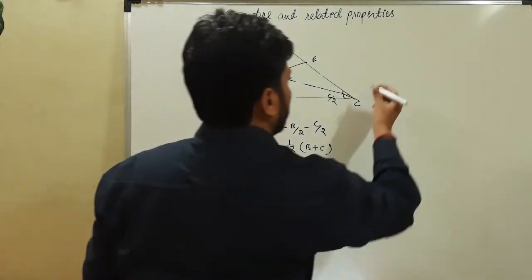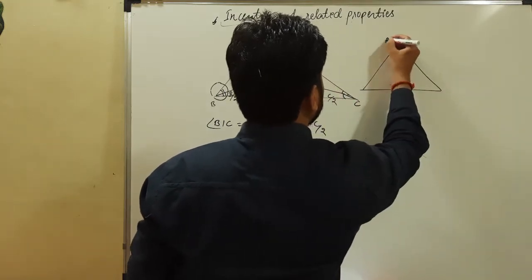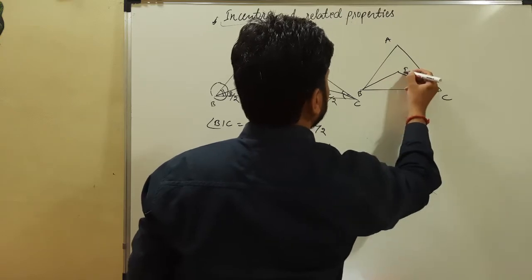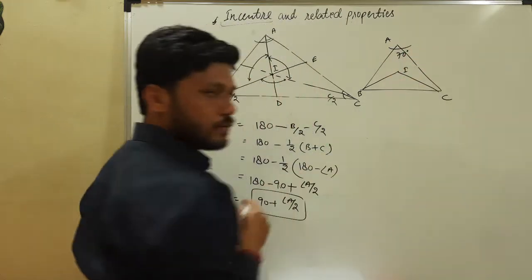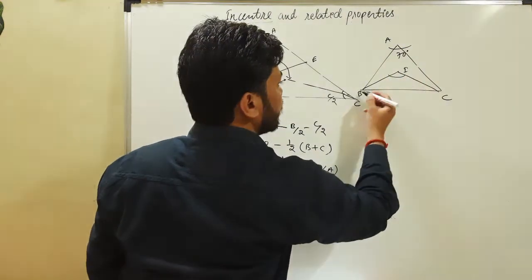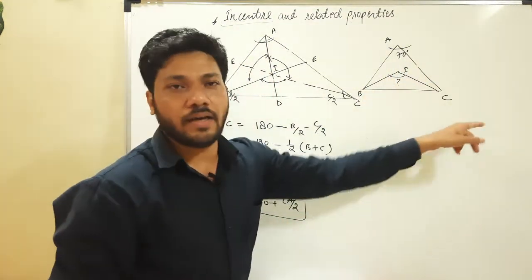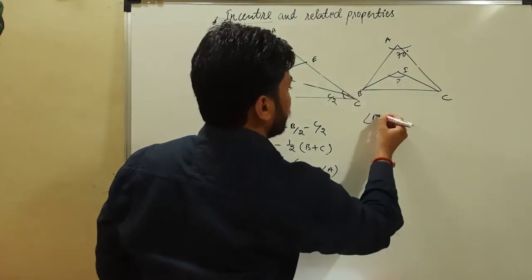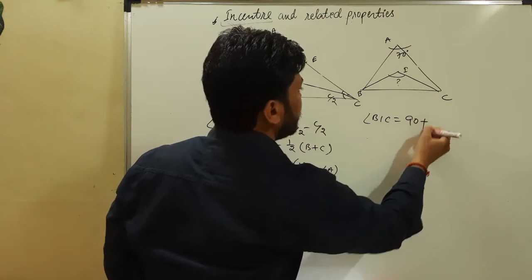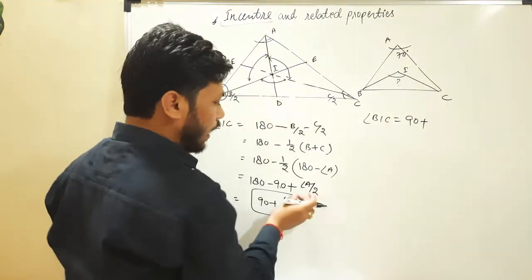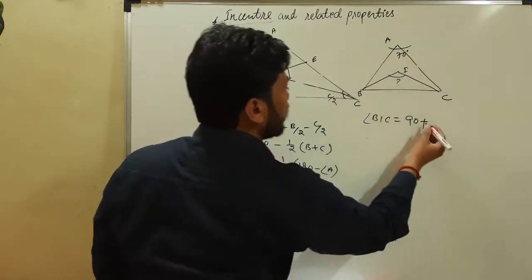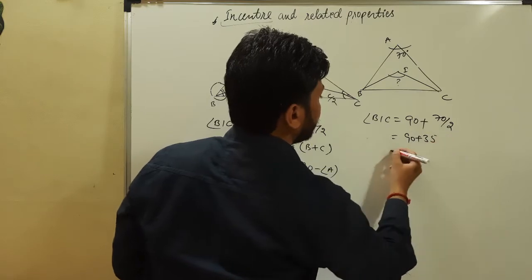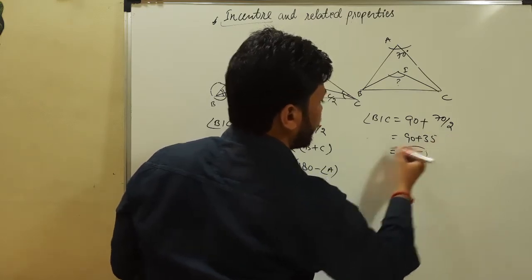Let us understand by a question. In a triangle ABC, I is the incenter and the value of angle A is 70 degrees. What is the value of angle BIC? By this formula, angle BIC equals 90 plus half of the opposite angle A, which is 70 divided by 2. So this is 90 plus 35, which comes to 125 degrees.